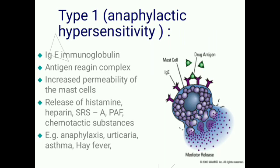Mast cells also release platelet activating factor and chemotactic substances, producing reactions including anaphylaxis, urticaria, asthma, and hay fever.